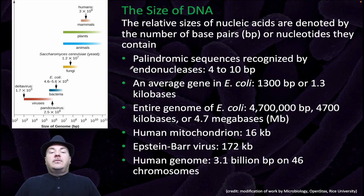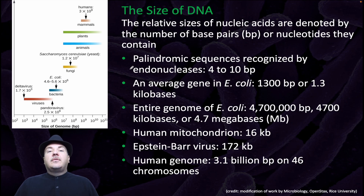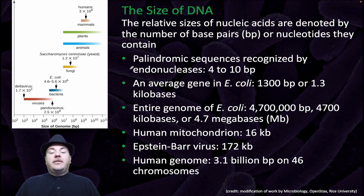The relative sizes of nucleic acids are denoted by the number of base pairs or nucleotides they contain. Palindromic sequences recognized by endonucleases are between 4 and 10 base pairs. The average gene in E. coli is 1,300 base pairs or 1.3 kilobases. The entire genome of E. coli is 4.7 million base pairs, or 4,700 kilobases, or 4.7 megabases. The human mitochondria has a genome of 16 kilobases. The Epstein-Barr virus, 172 kilobases. The human genome is 1.3 billion base pairs on 46 separate chromosomes.